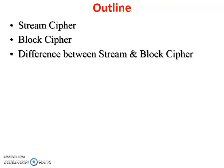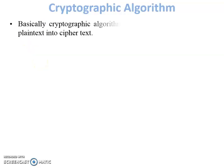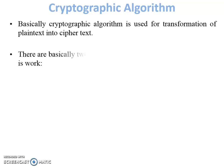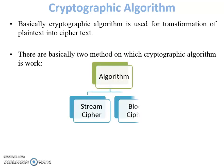Before discussing all these topics, let's see how a cryptographic algorithm works. Cryptographic algorithms basically work on two methods: one is stream cipher and the second one is block cipher. So now let's discuss them one by one.